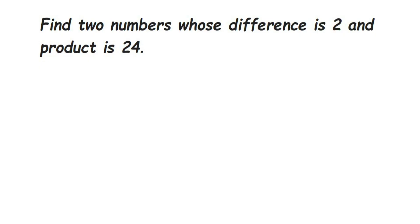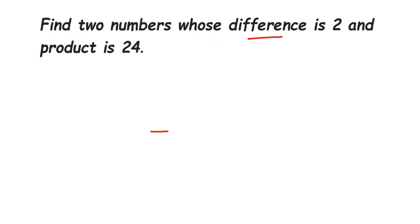Everyone, here is a question: find two numbers whose difference is 2 and product is 24. We have to find two numbers such that when you subtract them the answer is equal to 2, and when you multiply them the answer is equal to 24.